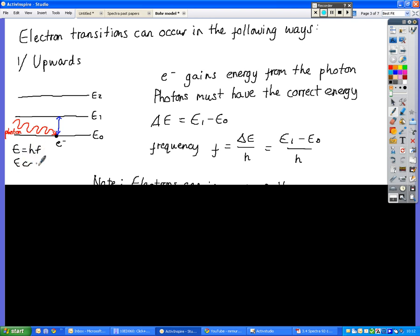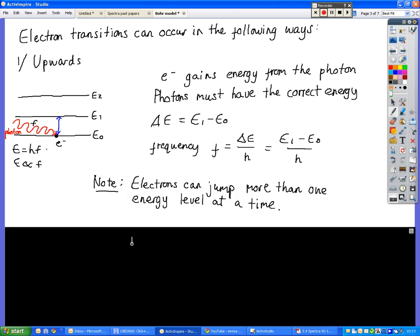That just means that energy is directly proportional to frequency. If you know how much energy is required to move between these levels, you can use that to calculate the frequency. Because the energy required, delta E, the change in energy required to jump from one level to the next, just rearrangement of E equals HF allows you to calculate what frequency this photon must be. This will have a certain associated energy and a certain associated frequency.